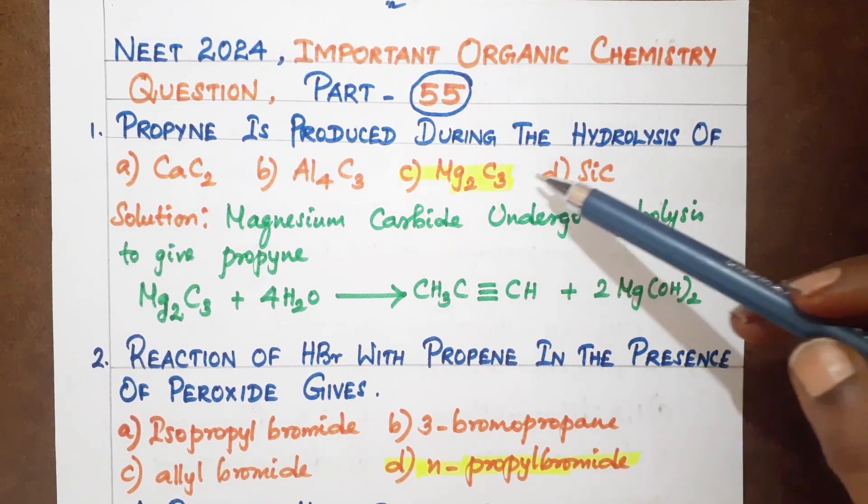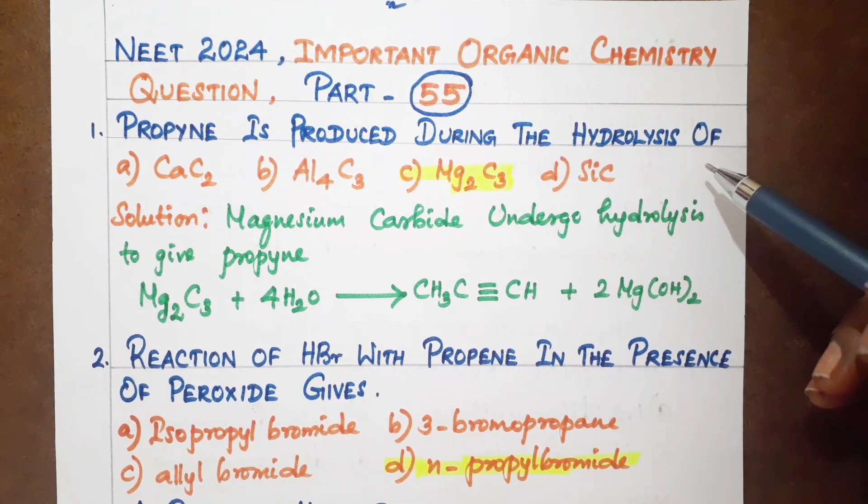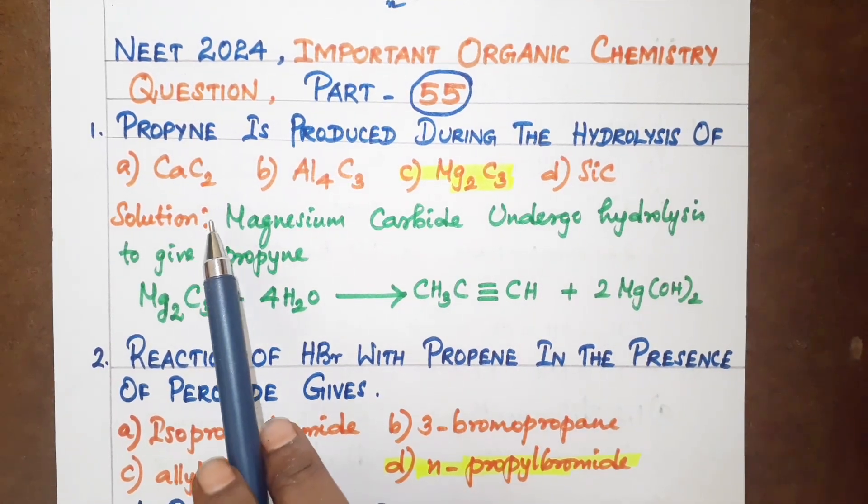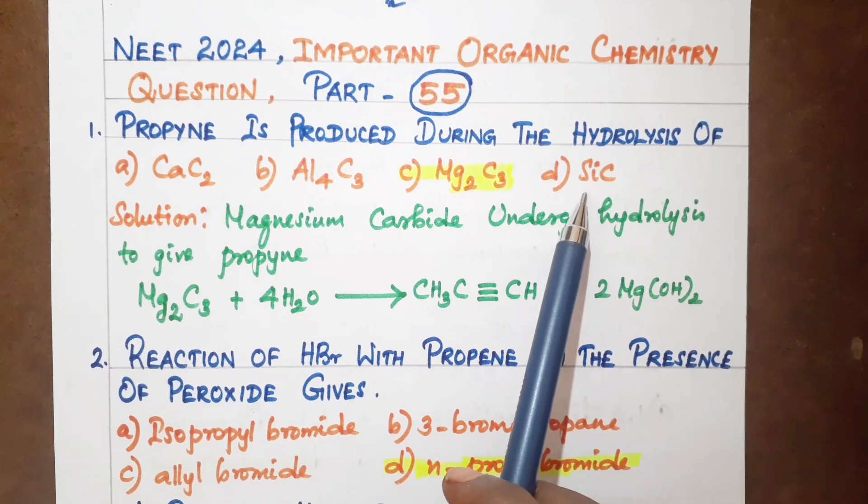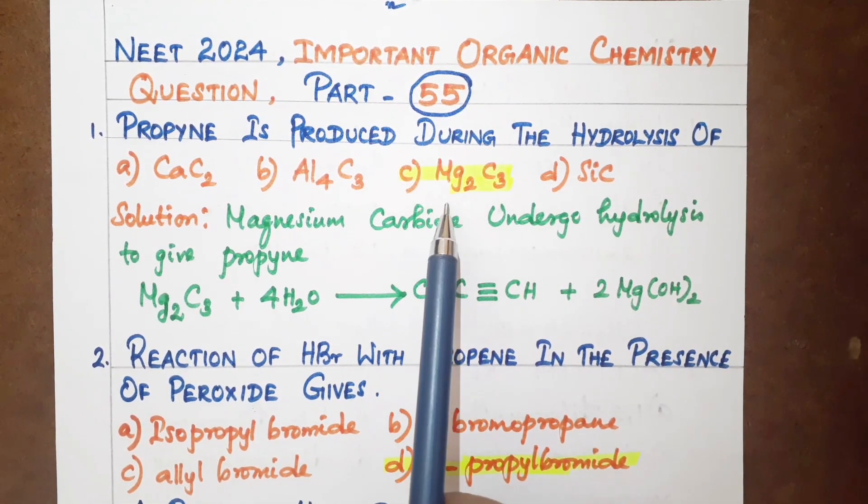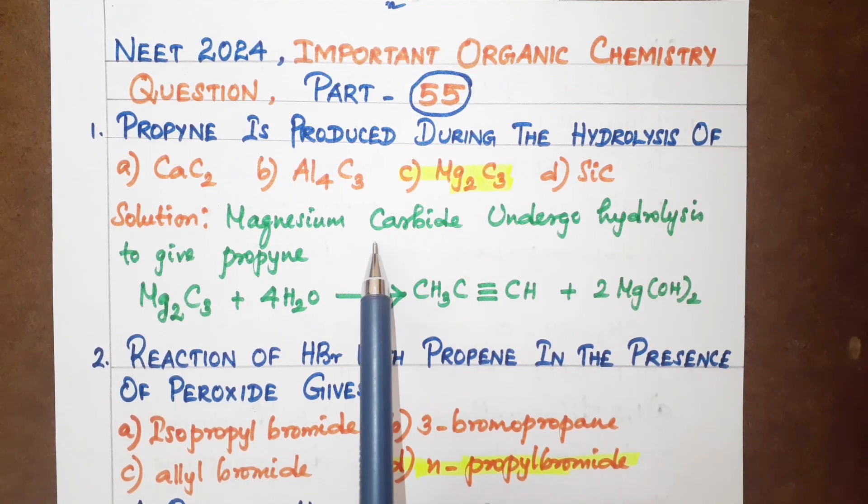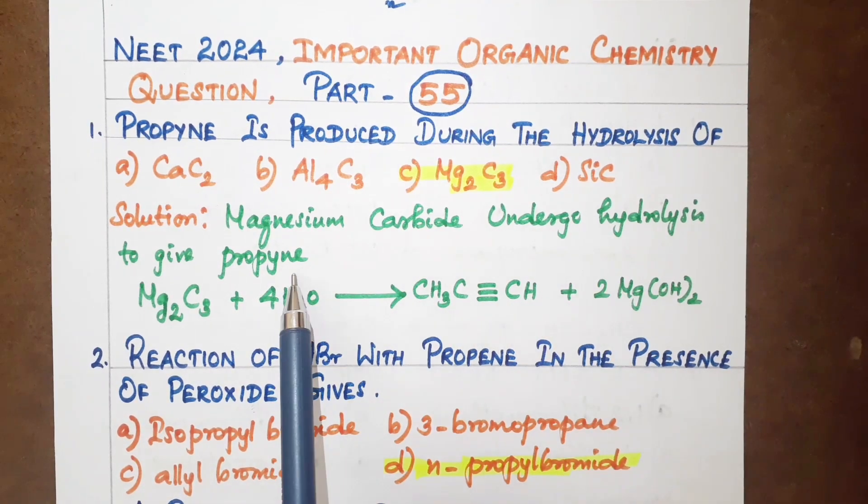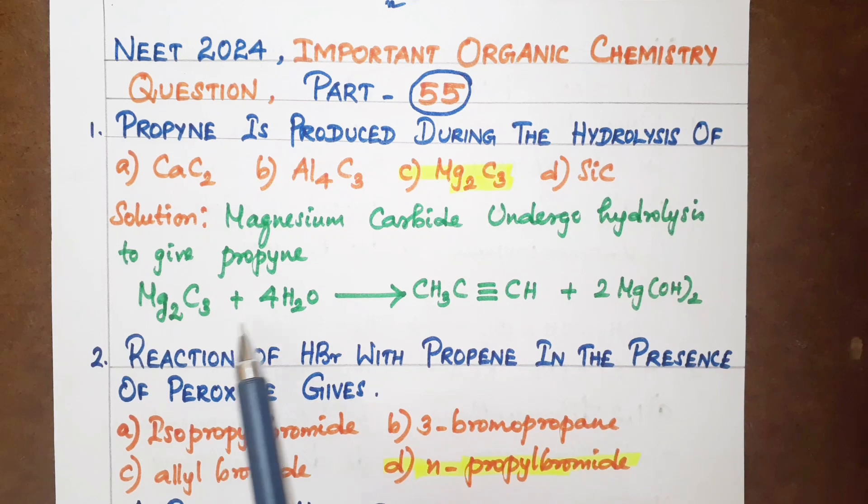First question: Propyne is produced during the hydrolysis of which compound? Options are calcium carbide, aluminum carbide, magnesium carbide, and silicon carbide. The correct answer is magnesium carbide. Magnesium carbide undergoes hydrolysis to give propyne.